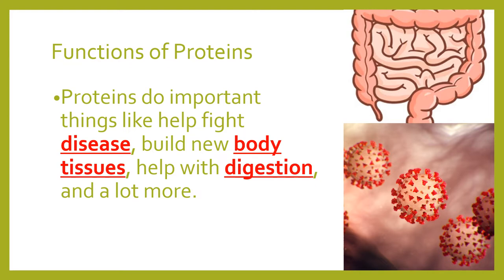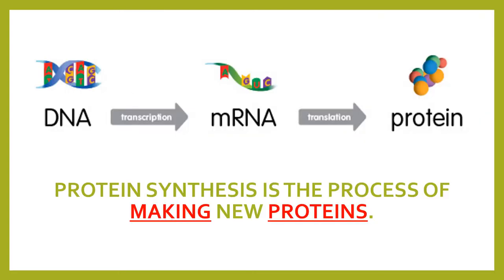Functions of proteins: proteins do important things like help fight disease, build new body tissues, and help with digestion. We have proteins in our gut that help us digest food, and proteins like our immune cells that help us fight off infections and diseases. This process of going from DNA to making proteins is called protein synthesis, and protein synthesis is the process of making new proteins.